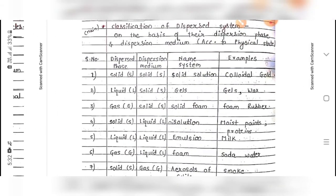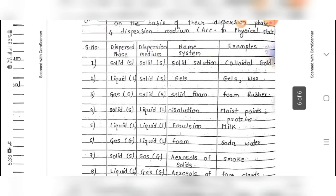Now the main classification of dispersed systems — this is commonly asked in exams. On the basis of dispersed phase and dispersion medium, the system is classified. Dispersed phase means the substance which is dispersed, and dispersion medium means the substance in which it is dispersed.